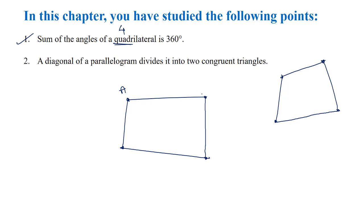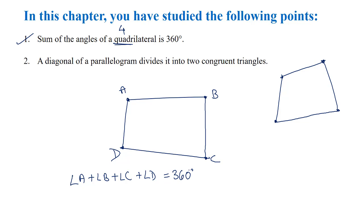That means if A, B, C, D is a quadrilateral, then the sum of all the angles — angle A plus angle B plus angle C plus angle D — will be equal to 360 degrees. This is the first property. You will create a diagonal, and you will get two triangles: triangle ABD and triangle CBD.